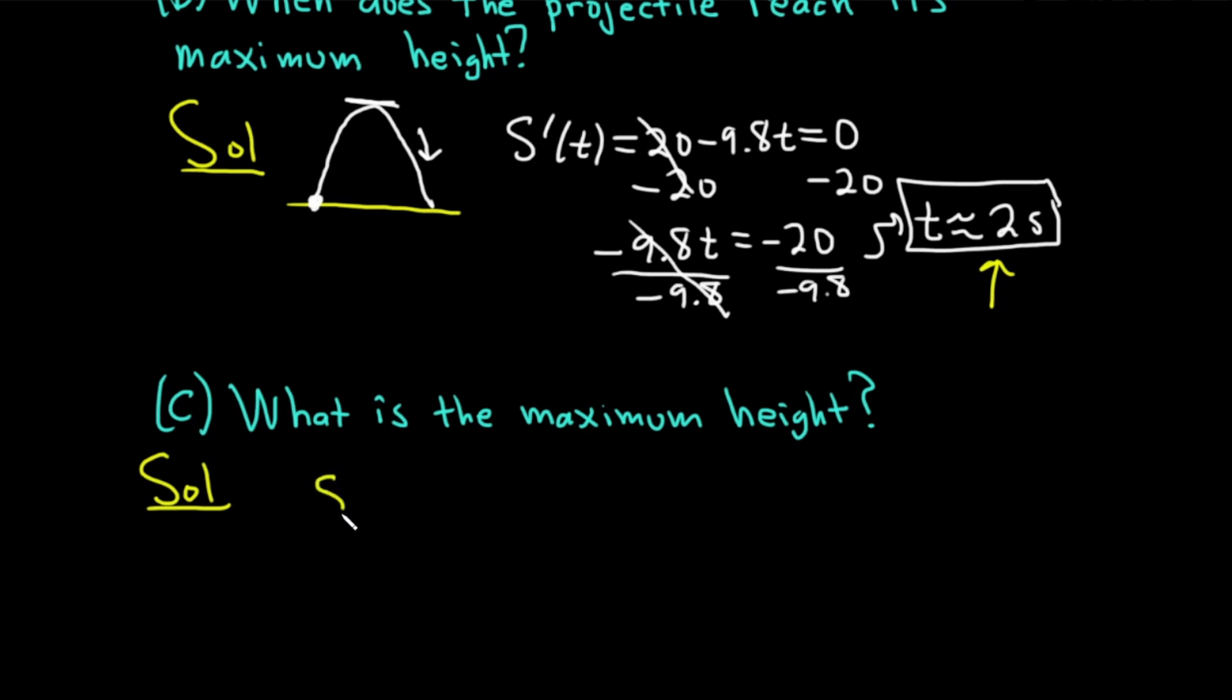Recall that our position function was s(t) = 3 + 20t - 4.9t². So this tells us the height after t seconds. So all we have to do to find the maximum is plug in 2 because we know that's when the max occurs. We get 3 + 20 × 2 - 4.9 × 2².